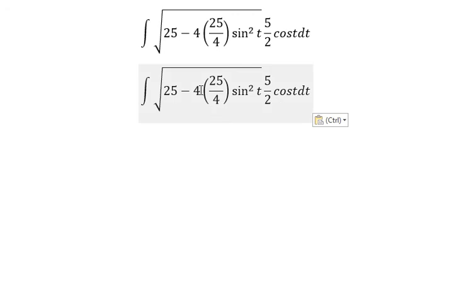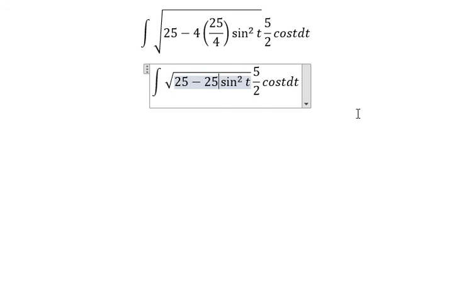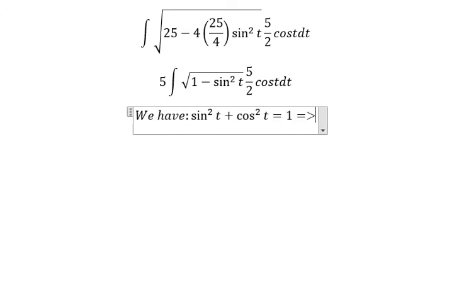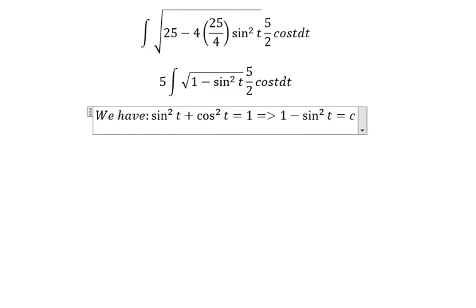We have 4 and 4 which cancel, and we got 25. We put the square root of 25 outside. Next we have the formula sin²(t) + cos²(t) = 1, so we have 1 - sin²(t) = cos²(t).